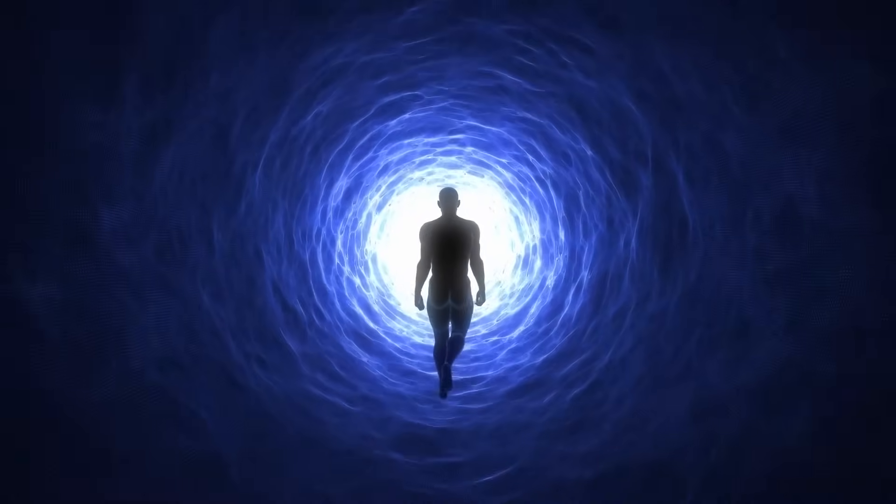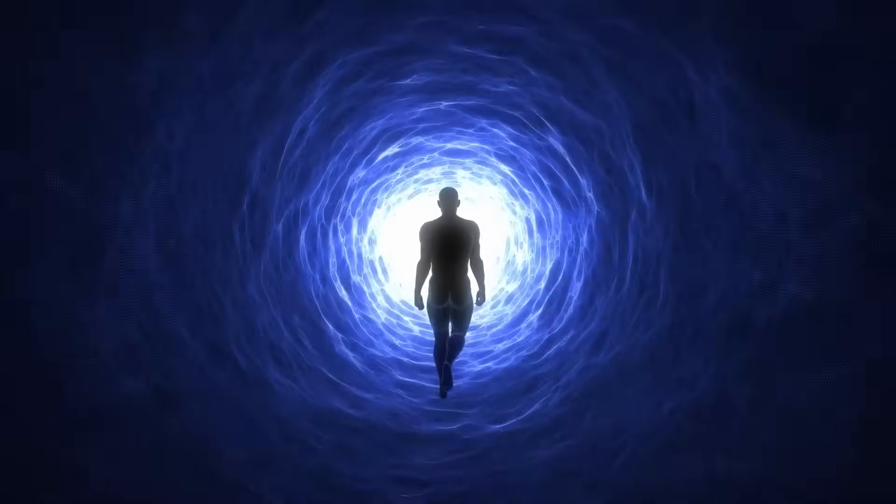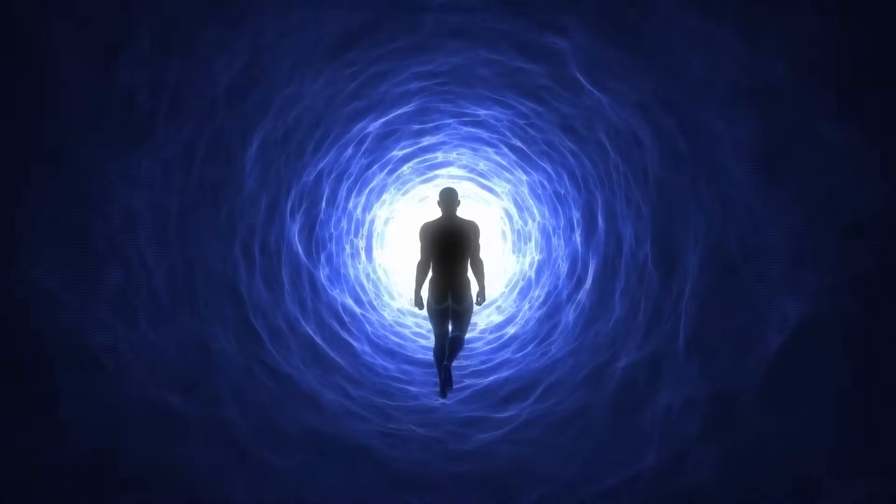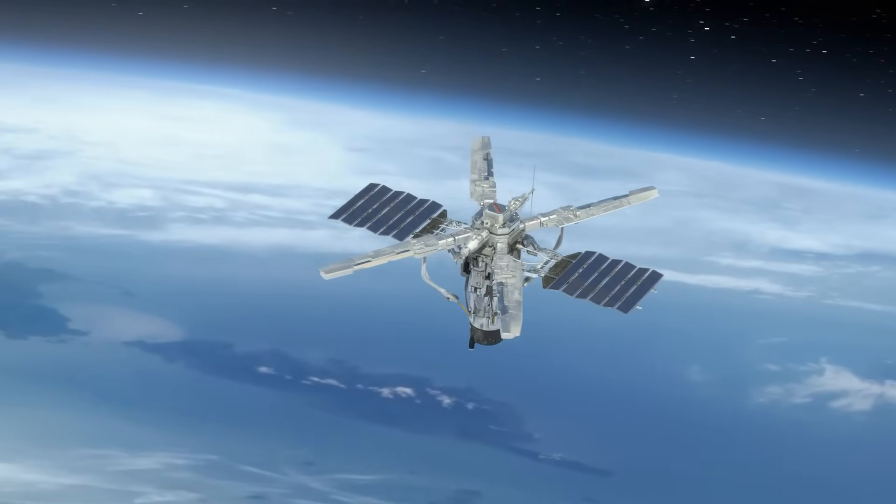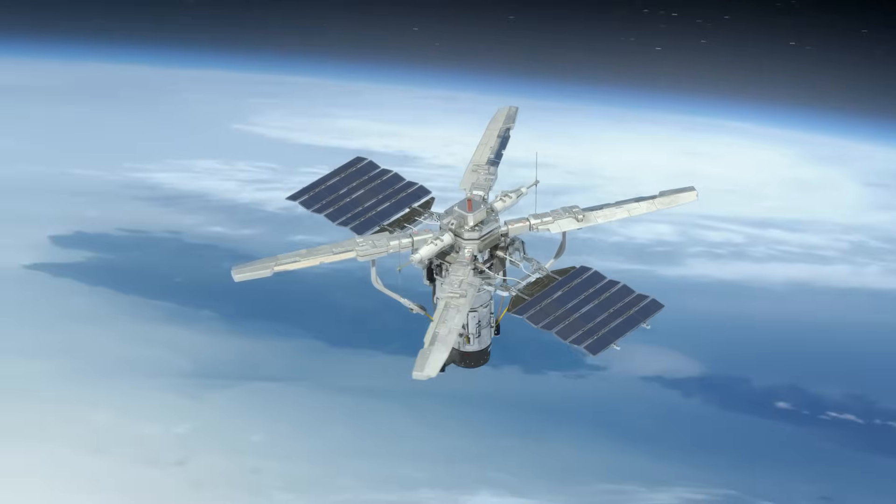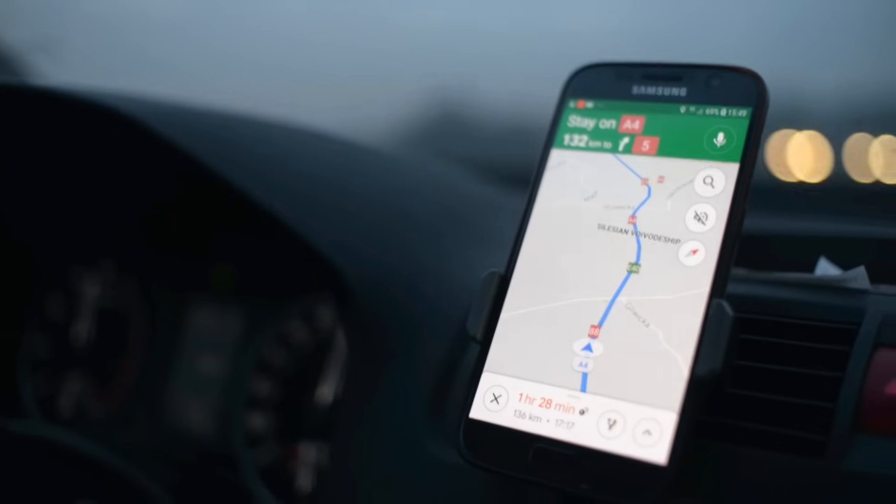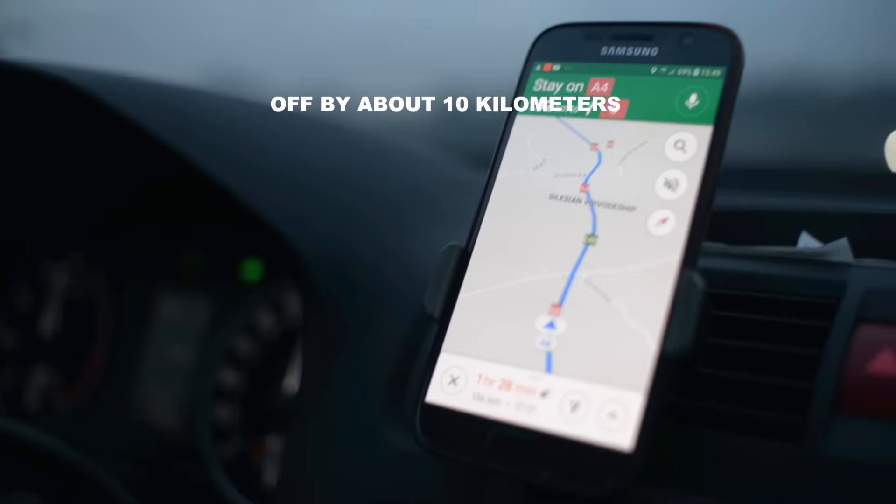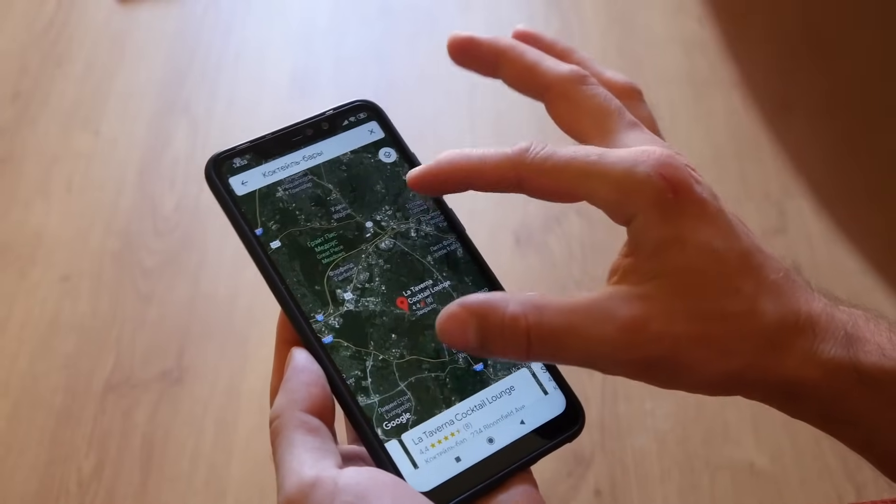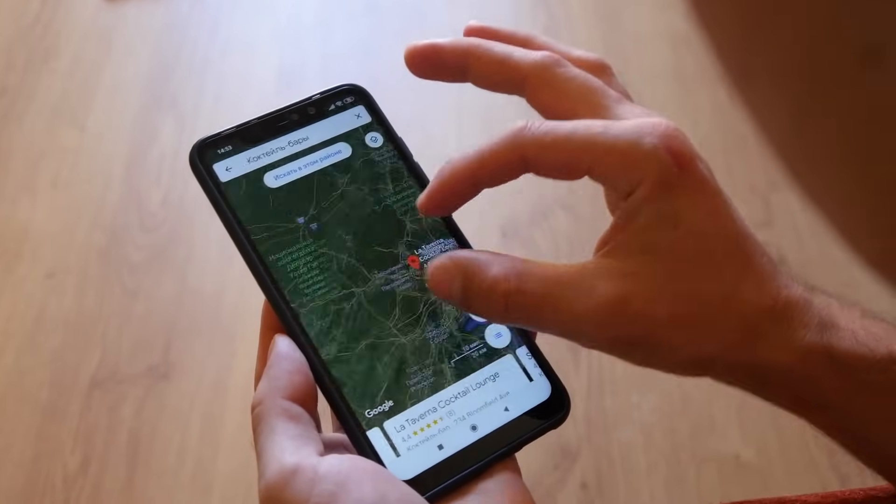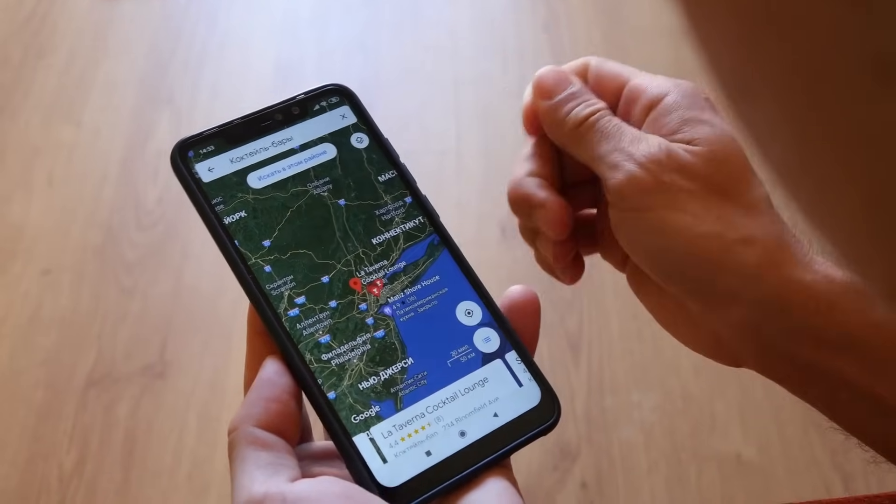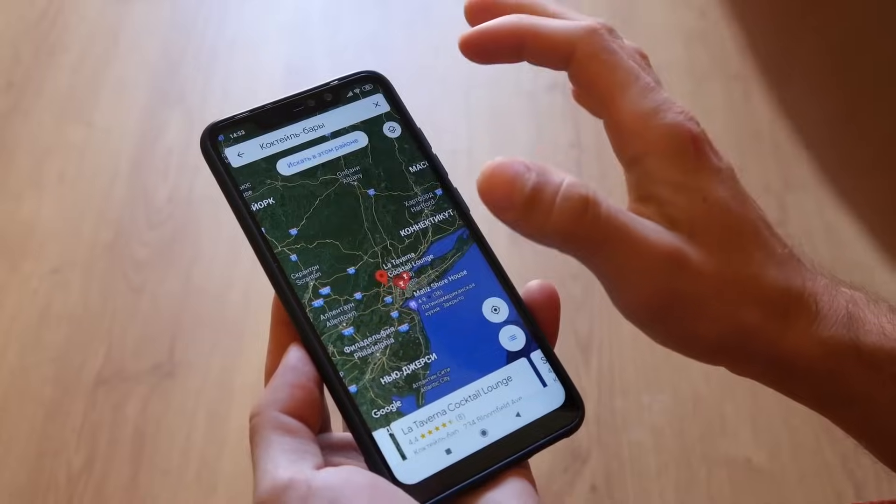This weird time dilation effect isn't just some far-out theory. We can measure it right here on Earth. GPS satellites, which orbit at high speeds, experience time slightly different than we do on the ground. If we didn't account for this time difference, your GPS would be off by about 10 kilometers a day. So, the next time you use your phone to navigate to the nearest pizza joint, thank Einstein for making sure you don't end up in the middle of nowhere.